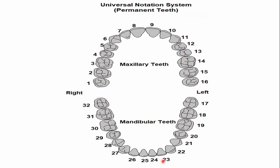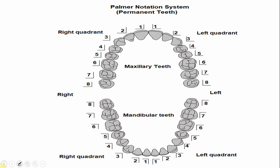In various tooth notation systems, the maxillary lateral incisor in the universal numbering system is numbered seven for the right maxillary lateral incisor and ten for the left. In the Palmer notation system, the number of both the maxillary right and left lateral incisors is two.